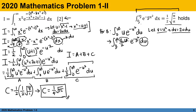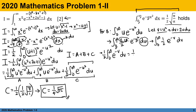Substituting v, we have the integral from 0 to infinity of one half e to the negative v dv. For B, we have one half times the integral from 0 to infinity of e to the negative v dv. This equals one half times negative e to the negative v, evaluated from 0 to infinity.